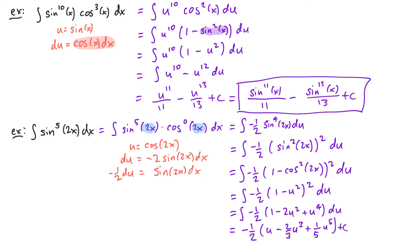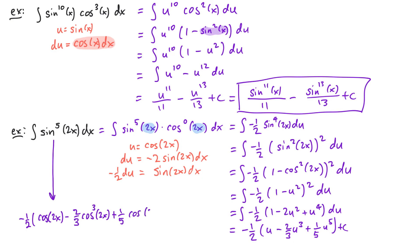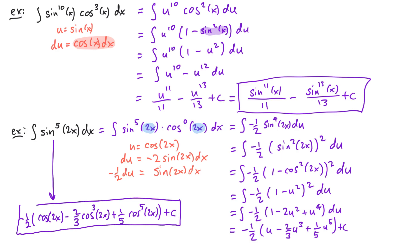The last thing we need to do is substitute back in terms of x. We have negative one half times cosine of 2x minus two thirds cosine of 2x cubed plus one fifth cosine of 2x to the fifth power plus c. And that's our final answer.